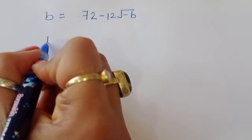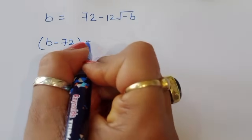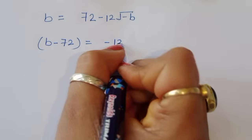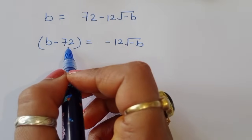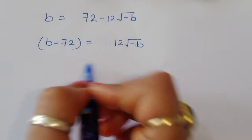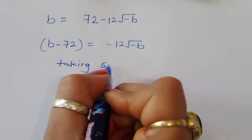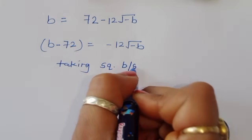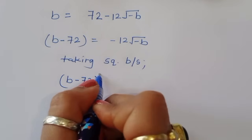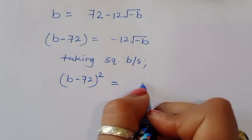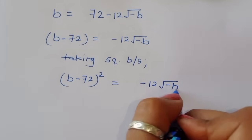We can rearrange this as b minus 72 is equal to minus 12 square root of minus b. Now, to cancel the square root, we take the square of both sides: (b minus 72) whole square is equal to (minus 12 square root of minus b) whole square.